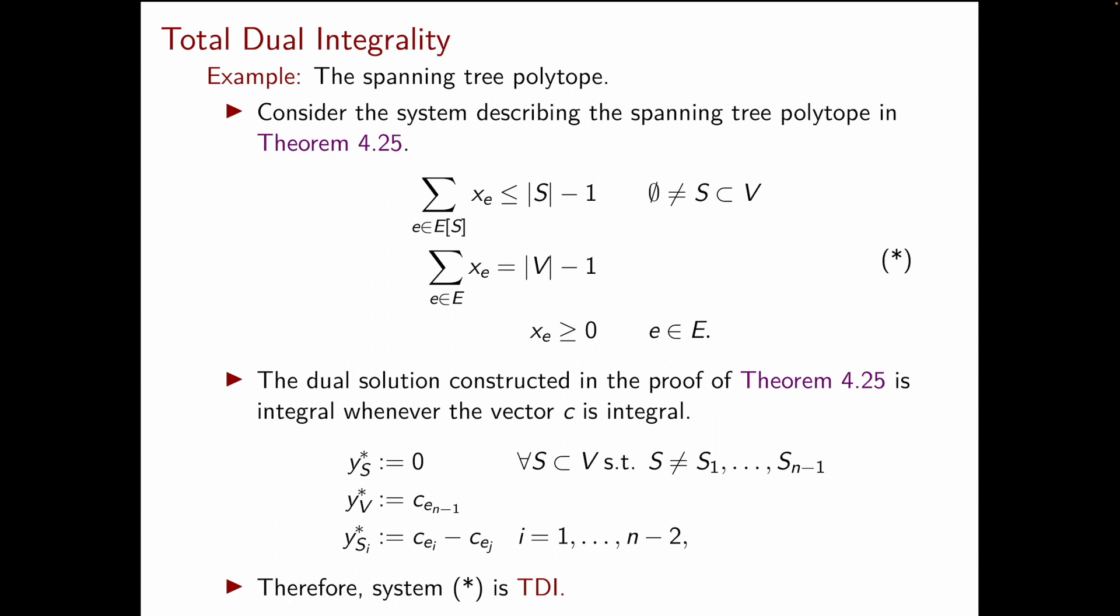And this linear program is precisely the one that we were considering in the proof of theorem 4.25. Now, based on the definition of TDI, we need to take the dual to this linear program. And again, in the proof of theorem 4.25, we exactly constructed such a dual problem. Now, to check that the system star is, in fact, TDI, we need to show that the dual has an optimal integer solution. And this is exactly what we have done in the proof of theorem 4.25.